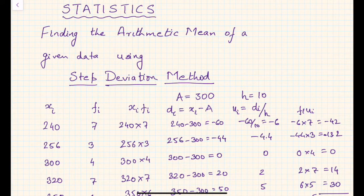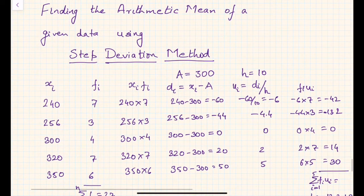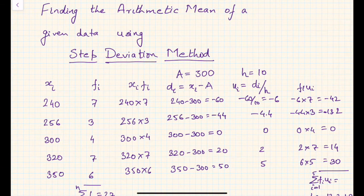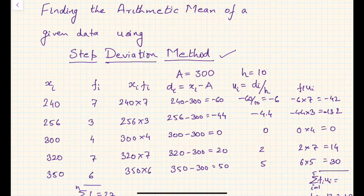Hello friends. In this session on statistics we are going to deal with another method of finding the arithmetic mean of a given data set — something called the step deviation method. In the previous two sessions we saw the direct method and the assumed mean method, which is also called the shortcut method. In this session we are going to study the step deviation method.